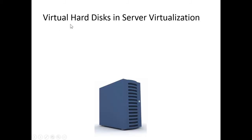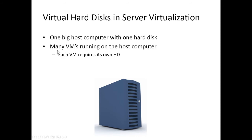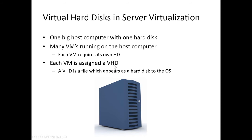To summarize our review: a virtual hard disk is a single file which is stored on a physical hard disk but appears as a physical hard disk. Now let's look at virtual hard disks in the context of server virtualization. In server virtualization, we have one big host computer with one big hard disk, and many virtual machines run on that host. Each virtual machine contains an operating system which requires its own hard disk, but instead of a physical hard disk, each virtual machine is assigned a virtual hard disk — a file which appears as a hard disk to the operating system installed in the virtual machine.